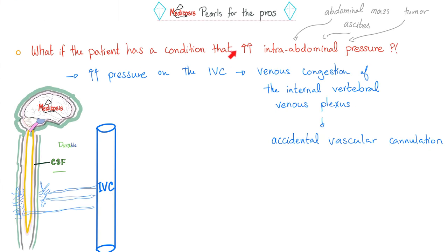The last treatment for post-dural puncture headache is a blood patch: you take some of the patient's own blood and inject it into the epidural space near the puncture site. Do not use someone else's blood, as this can trigger an immunological reaction.